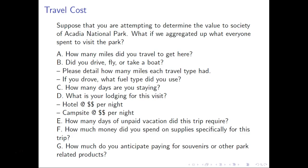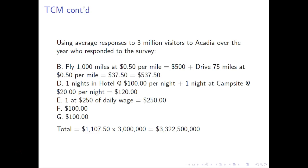The travel cost method attempts to elicit willingness to pay by actually observing willingness to pay. In our previous example, suppose we have answers to those questions and three million visitors to Acadia over a given time period. This allows us to come up with the true social value for Acadia National Park for a given year. Using this data and updating it, we can see that according to our calculations, Acadia National Park is worth around 3.3 billion dollars annually to individuals visiting the park each year.